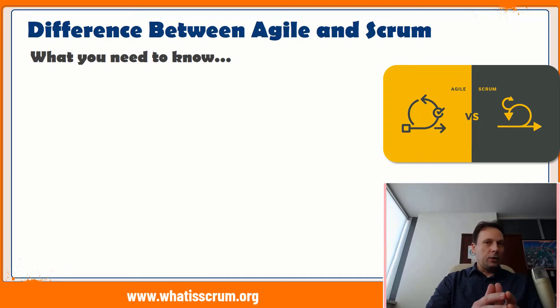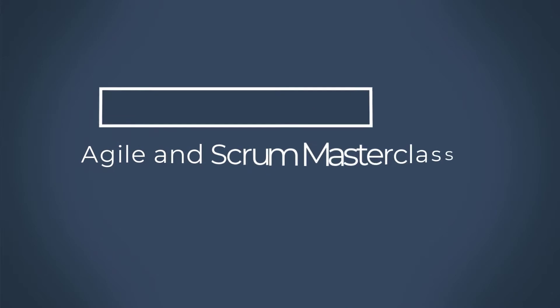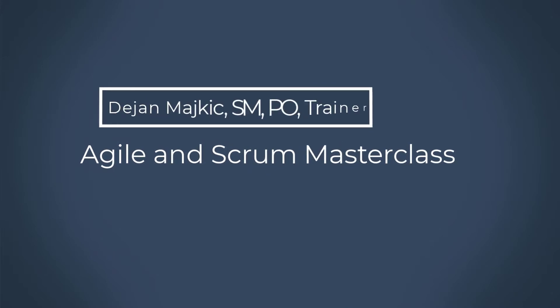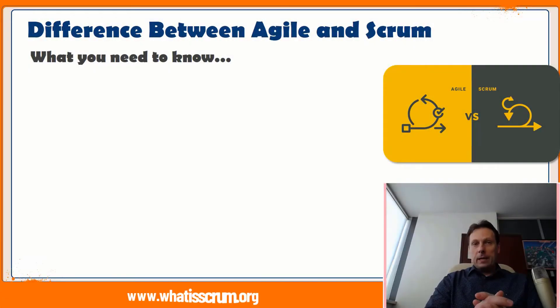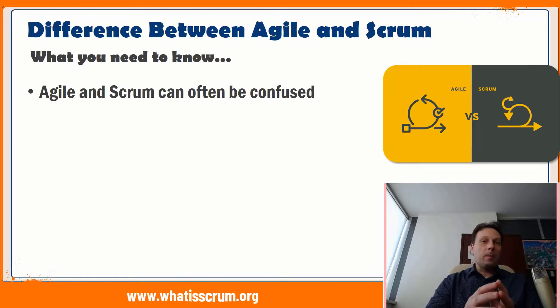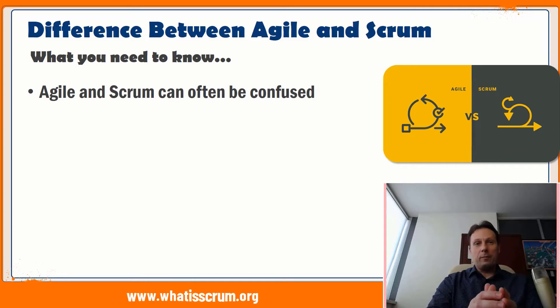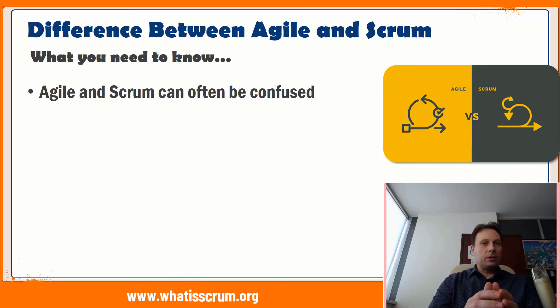The difference between Agile and Scrum. On the surface, it is easy to see why Agile and Scrum can often be confused, as they both rely on iterative process, frequent interaction, and collaborative decision-making.